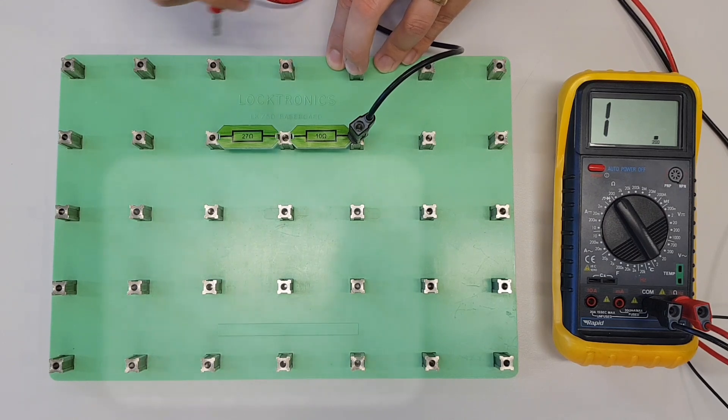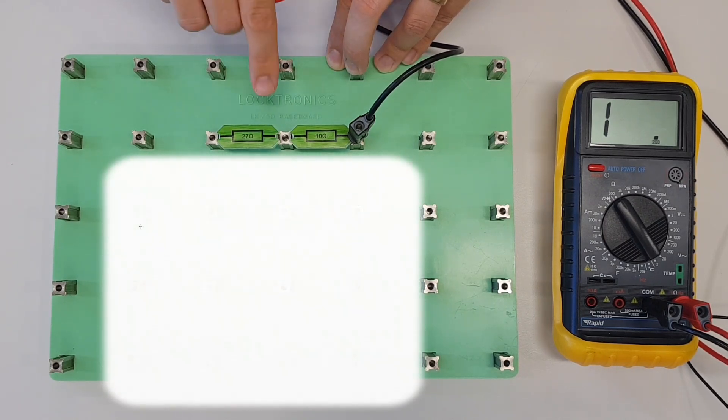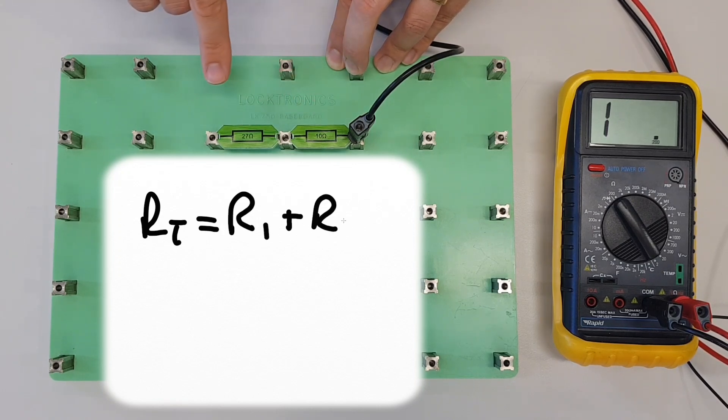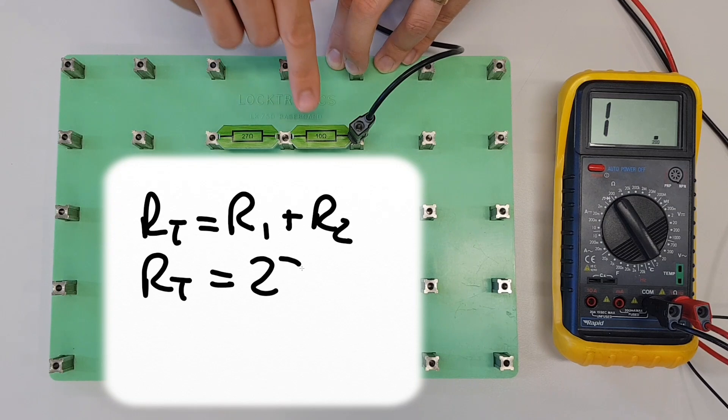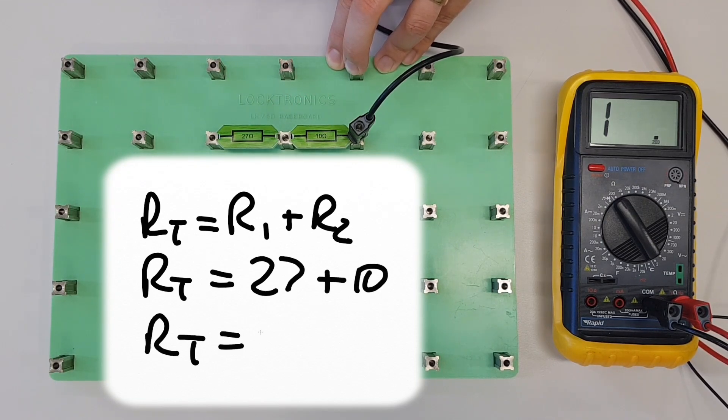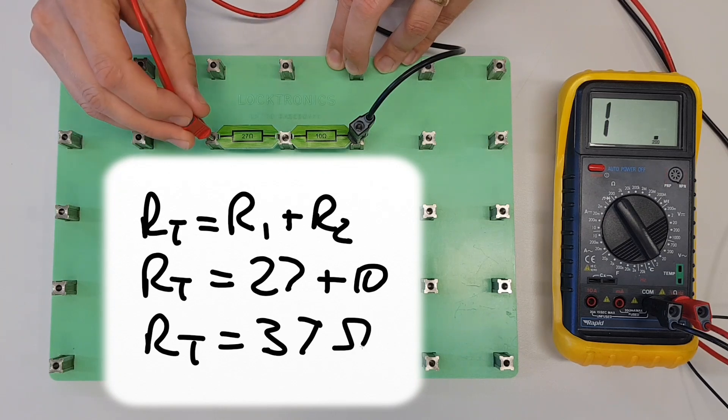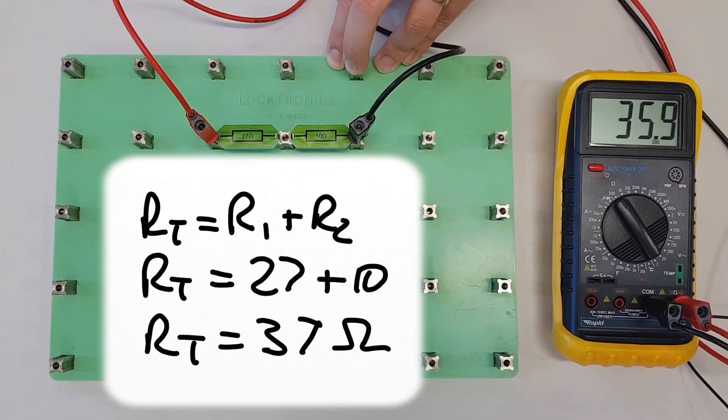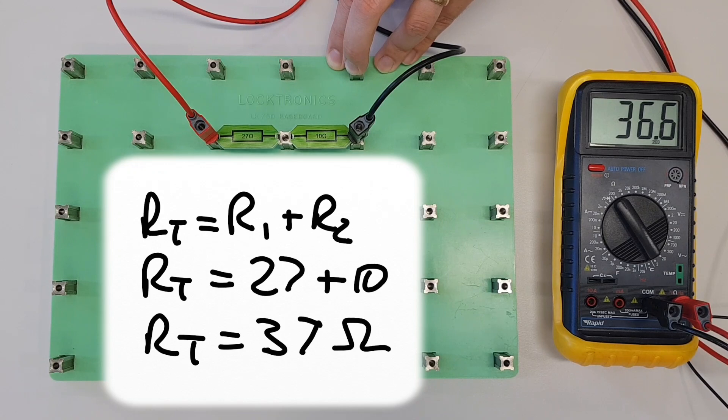We've got RT equals R1 plus R2, which gives us RT equals 27 plus 10, so our total resistance RT should be 37 ohms. Let's see if that's what we've got. We're coming out, once that settles down, at about 36.5, which again is very close to 37, so we're really happy with that reading.